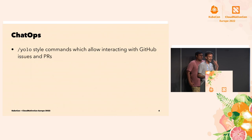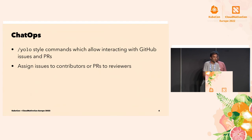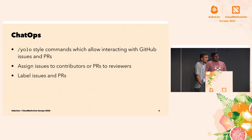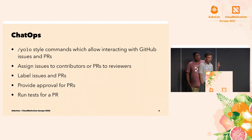Chat ops basically allows you to use a forward slash and then a command to interact with GitHub issues and PRs. YOLO is not a command — please don't try that. You can assign issues to contributors; if you're a new contributor and want to work on an issue, you can just do forward slash assign. Similarly, you can label issues and pull requests. Maintainers can provide approval for pull requests, and once they do, the pull requests get merged using another plugin we'll cover later. You can also run tests for a particular PR.